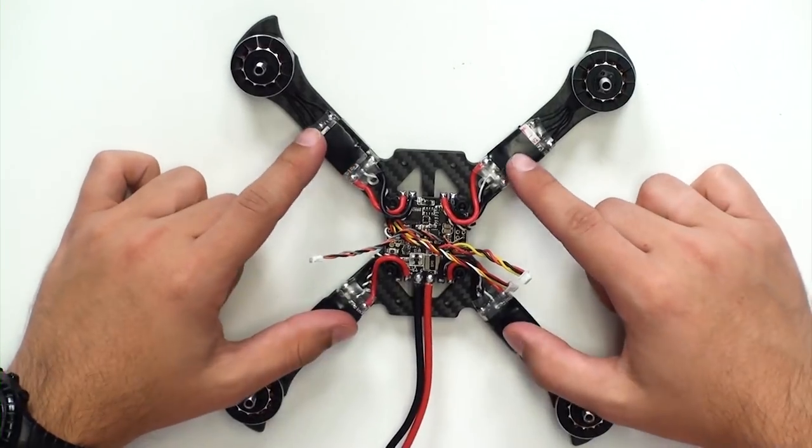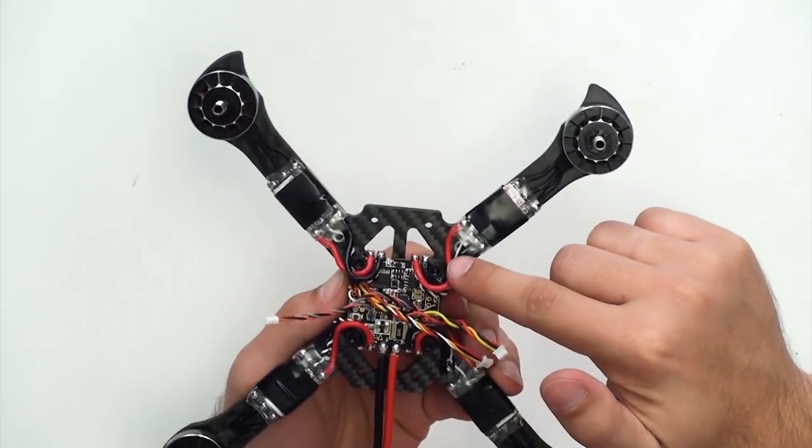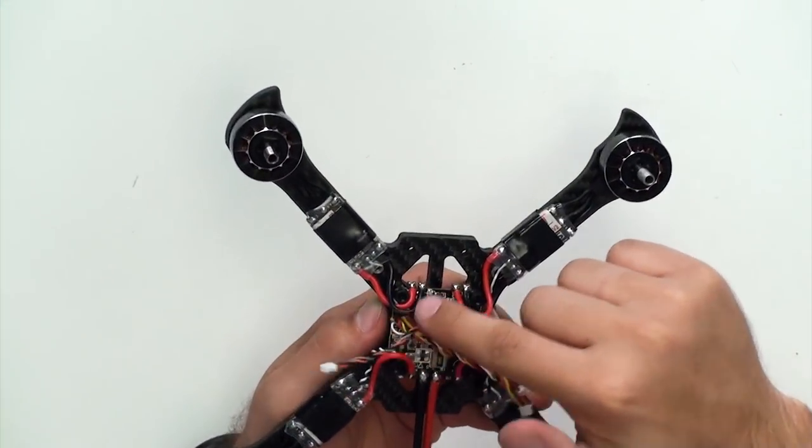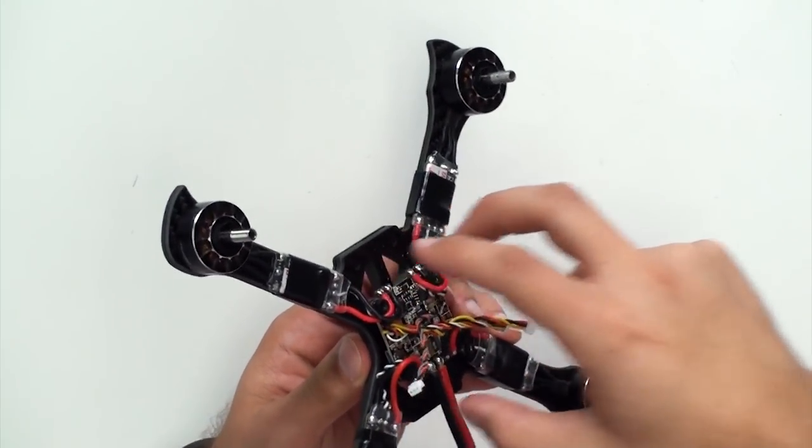When you're finished soldering all the ESCs to the arms, you should have something that looks like this, with all the power and ground wires coming in on the sides and then connecting to the flight controller board. That way the upper body has nice clearance to connect down into the middle.